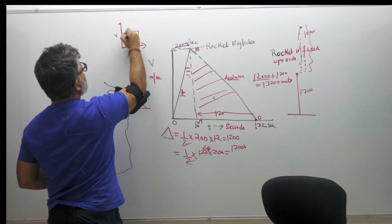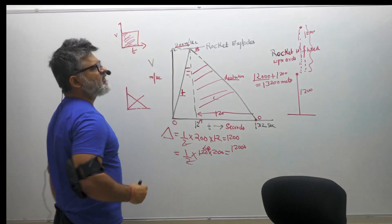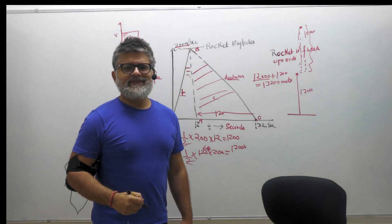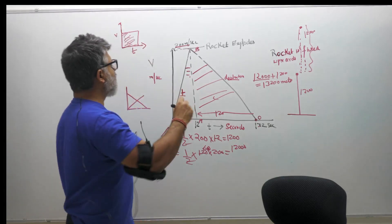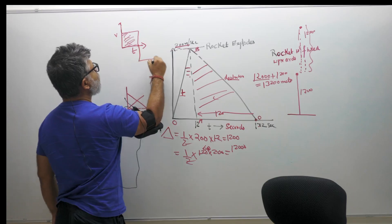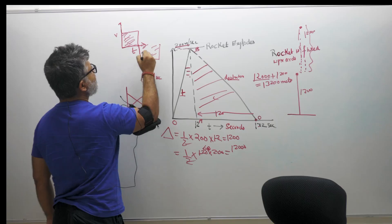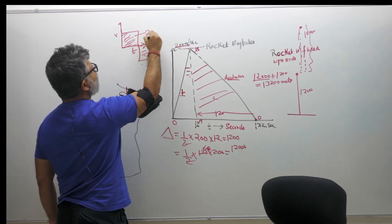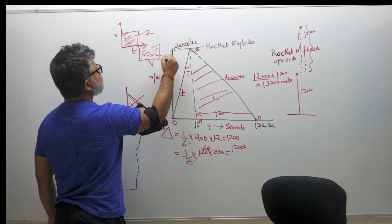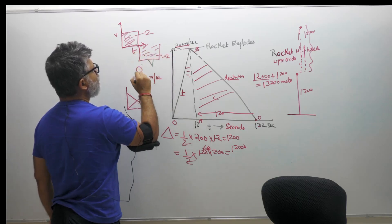If you have a velocity-time graph, the area under the velocity-time graph will tell you about the displacement. But be careful, if it is on the other side, you have to consider this to be a negative displacement. This is negative displacement.